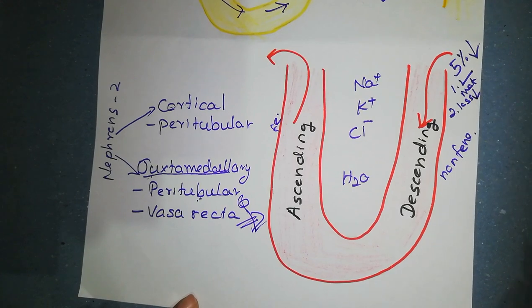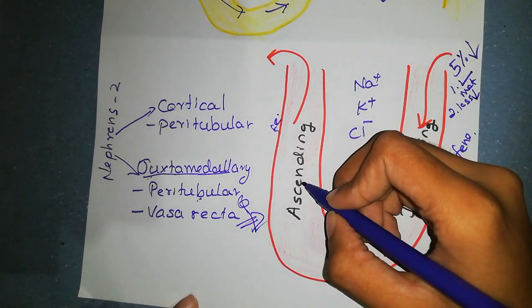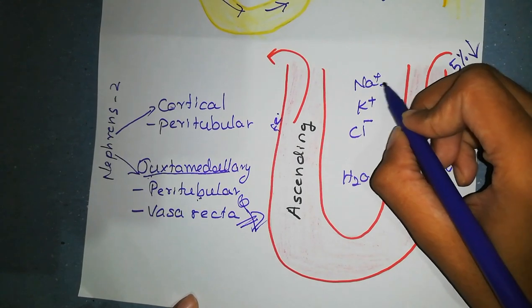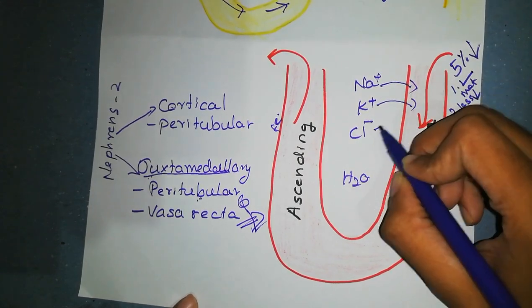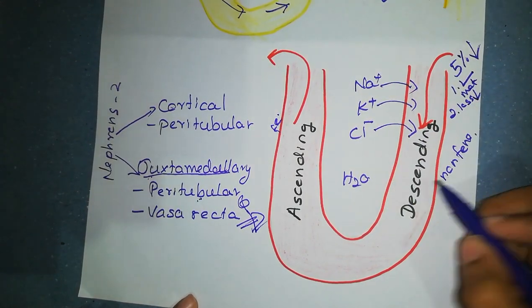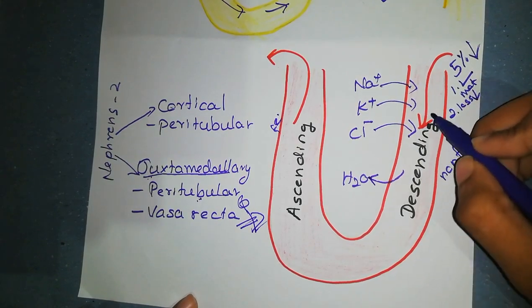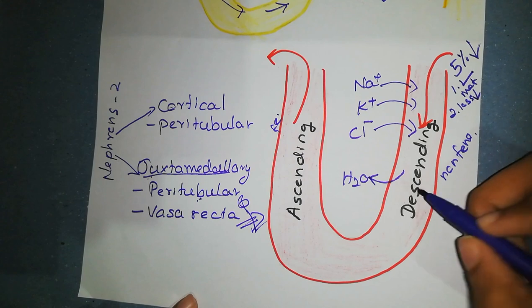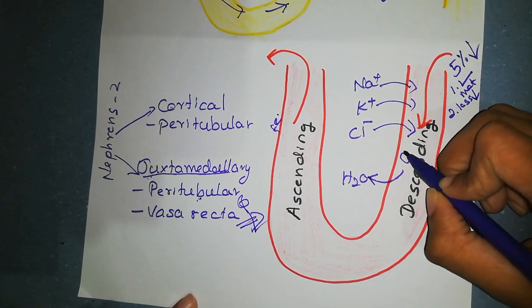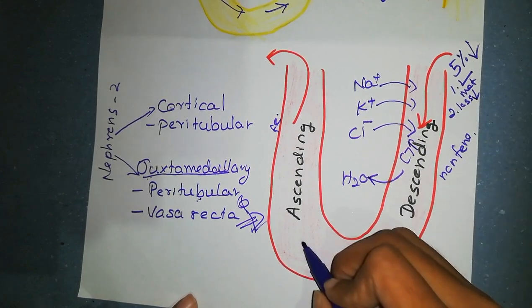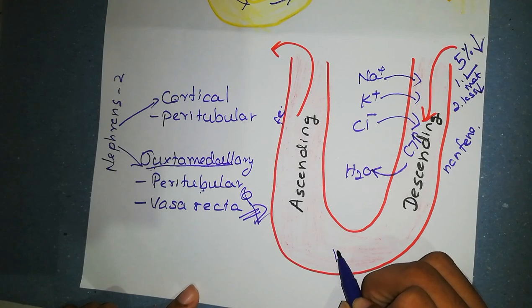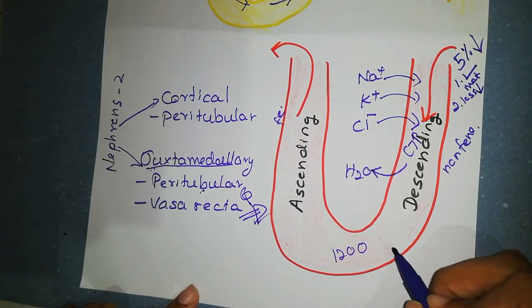Here when the blood descends through vasa recta into the medullary, solutes enter into vasa recta from interstitium and water is lost from the vasa recta into interstitium. So the descending limb of vasa recta becomes progressively concentrated and finally in the tips of the vasa recta it contains a fluid of 1200 milliosmol per liter.